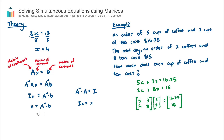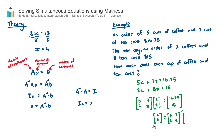Using that same process on the right-hand side example, the matrix of unknowns — the price for a cup of coffee and a cup of tea — equals the inverse of the coefficient matrix multiplied by the constant matrix. That is, the inverse of the 2×2 matrix [5, 3; 2, 8] multiplied by the constants matrix [16.25; 15].